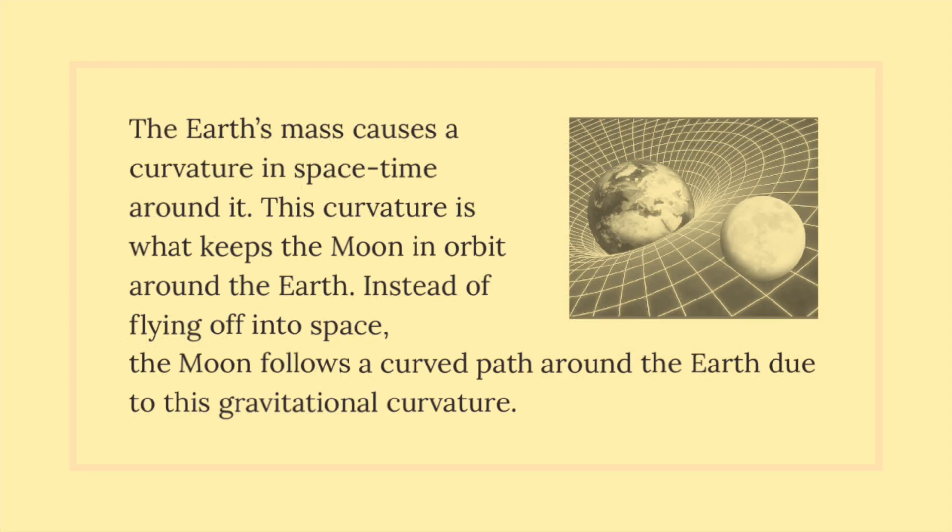The Earth's mass causes a curvature in spacetime around it. This curvature is what keeps the Moon in orbit around the Earth. Instead of flying off into space, the Moon follows a curved path around the Earth due to this gravitational curvature.